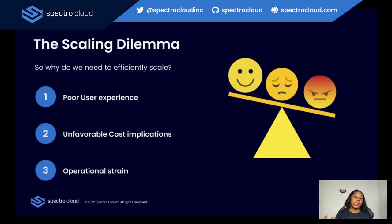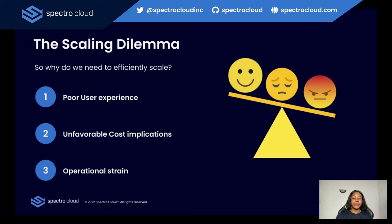So why do we need to scale efficiently? Traditional infrastructure struggles to meet the demand of fluctuating workloads. Let's look at two scenarios. The first is one where an e-commerce platform underestimates the demand during a flash sale and doesn't scale up its server capacity adequately. The outcome is that the website will experience slow response times, errors, and potential crashes due to insufficient resources, leading to a poor user experience and sometimes a drop in sales.